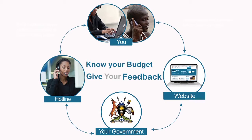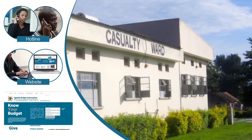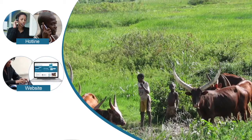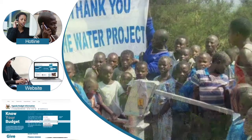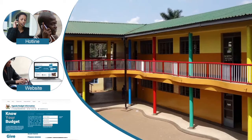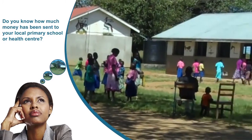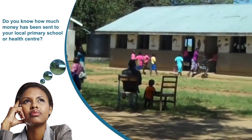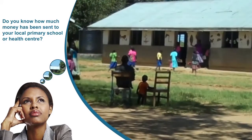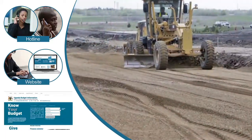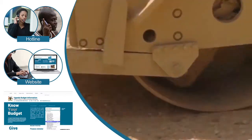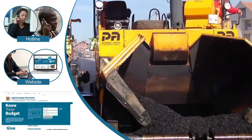Keep up-to-date with information regarding your local government's plans and spending on services and infrastructure for agriculture, water, education, health, and much more. For example, do you know how much money has been allocated to your local primary school? Do you know how much has been planned to be spent on road maintenance this year?